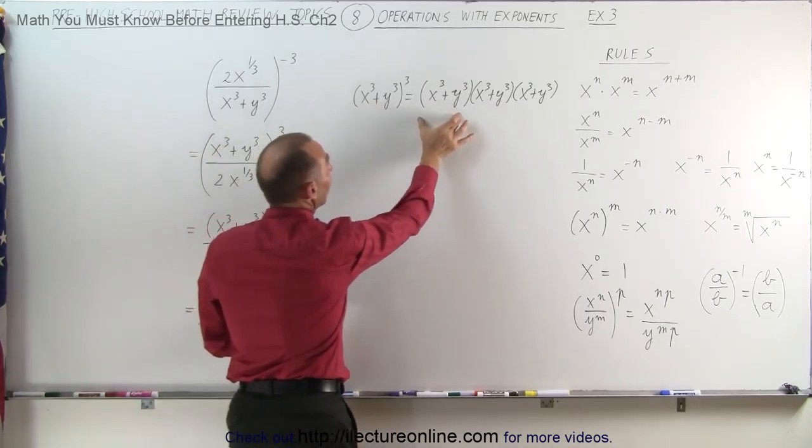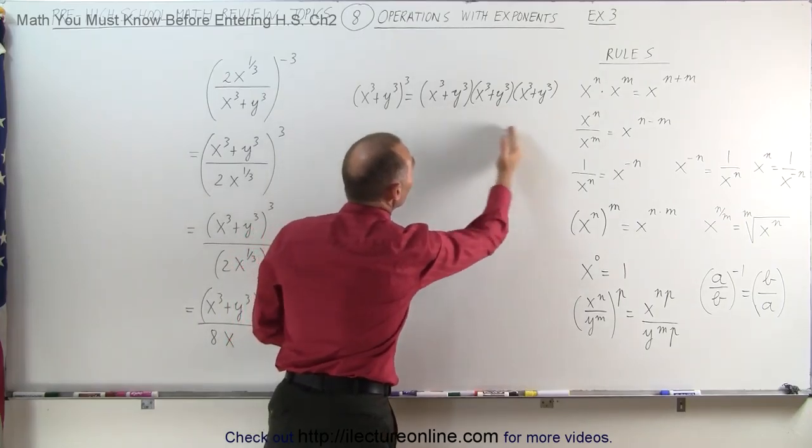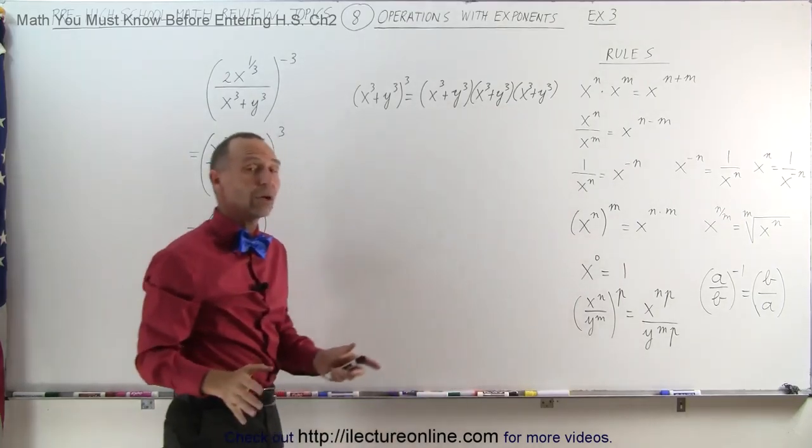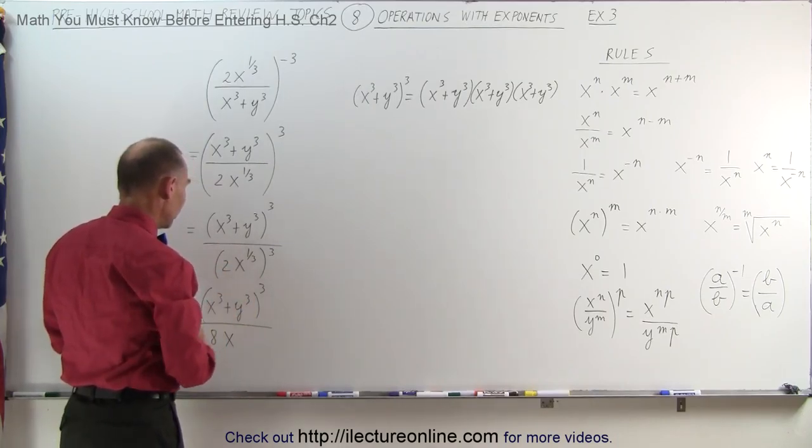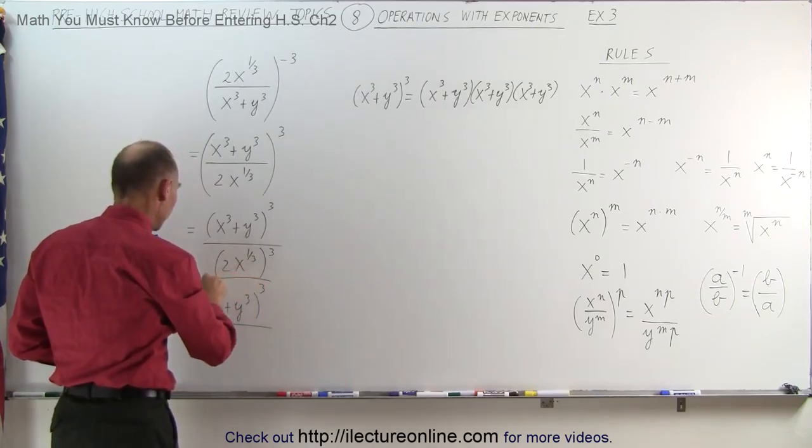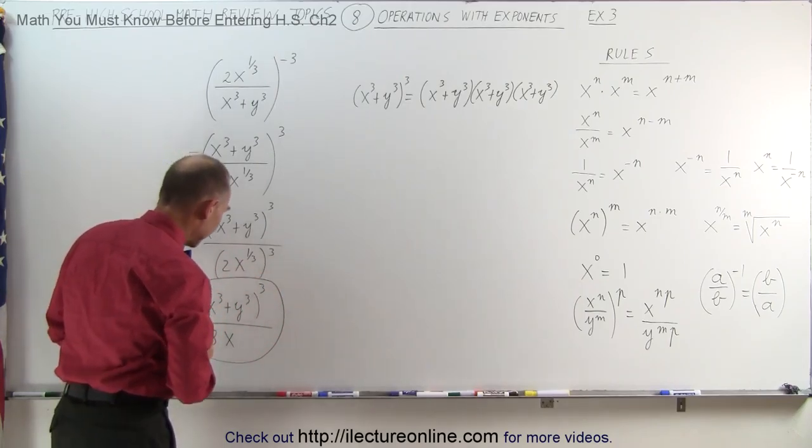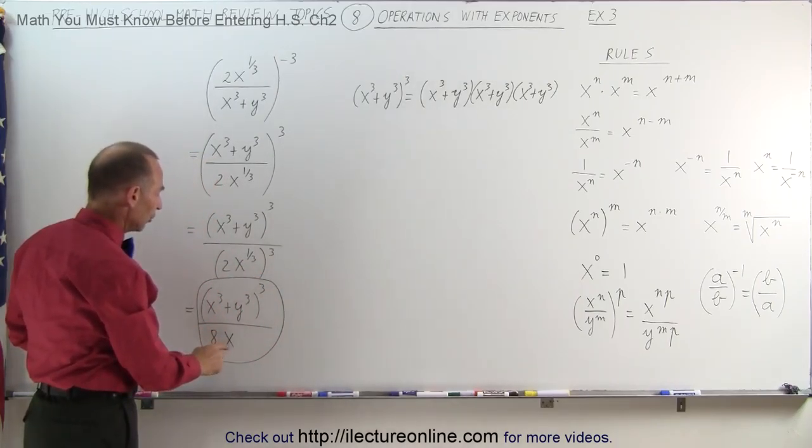The reason why I wrote this out is because you may be tempted to simply say, isn't this simply equal to x to the 9 plus y to the 9? The answer is no, because of this plus sign again. Since it's plus, you have to look at it like this, which means you have to multiply all this out. That would be a whole lot of work. It's simply easier to leave it in this form.